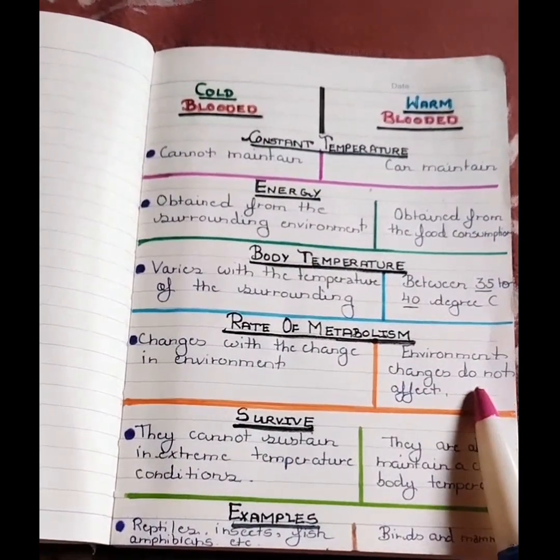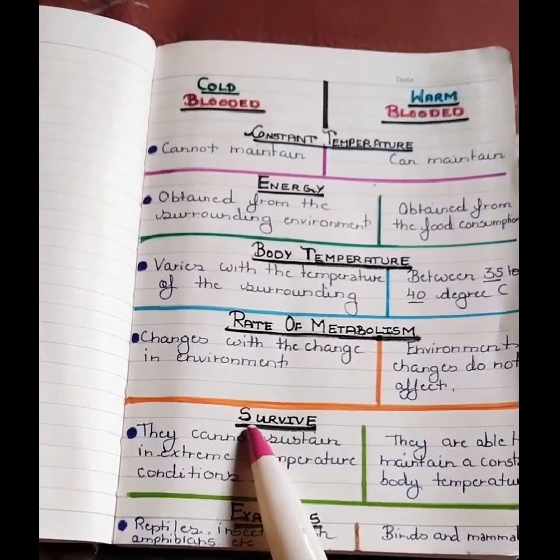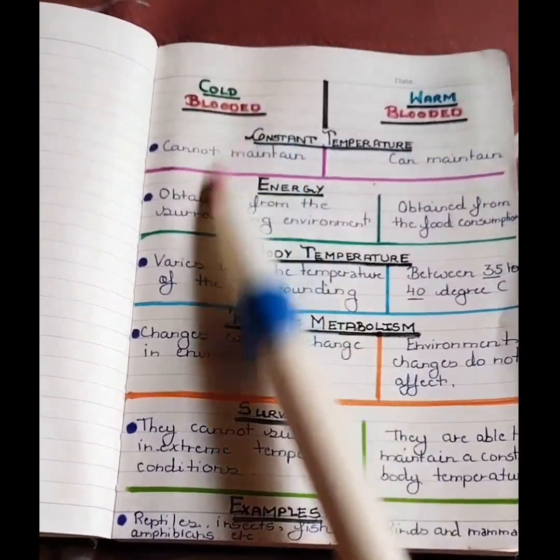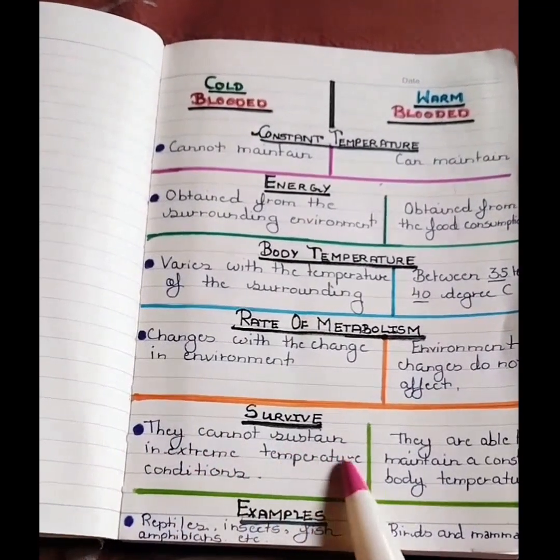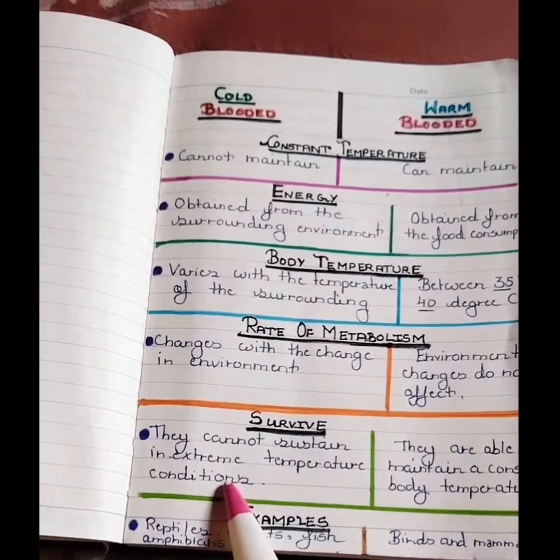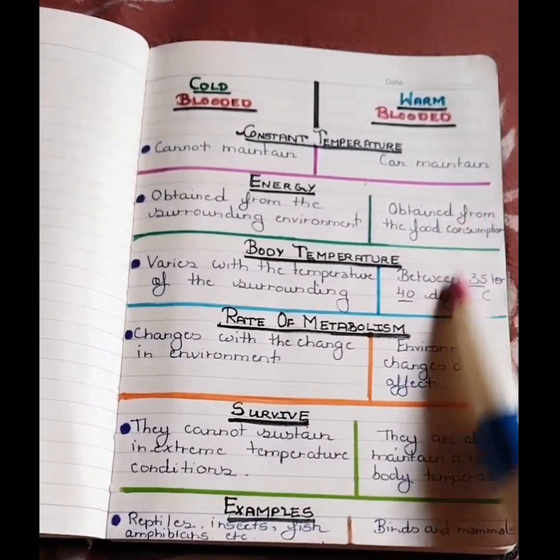Now the next point is survive. Cold-blooded, they cannot sustain in extreme temperature conditions, whereas warm-blooded, they are able to maintain a constant body temperature.